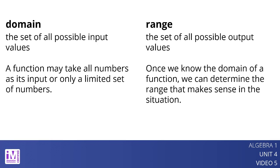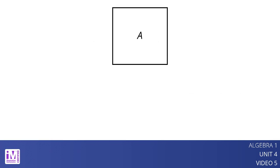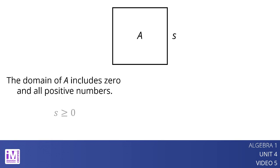Let's look at an example. A gives the area of a square in square centimeters as a function of its side length, s, in centimeters. The input of A can be 0 or any positive number such as 4, 7.5, or 19 thirds. It cannot include negative numbers because lengths cannot be negative. The domain of A includes 0 and all positive numbers, or s greater than or equal to 0.